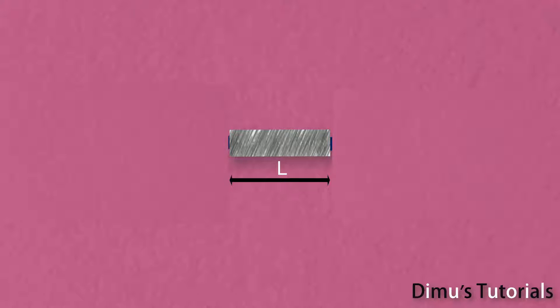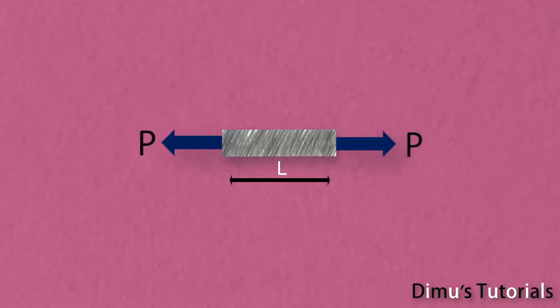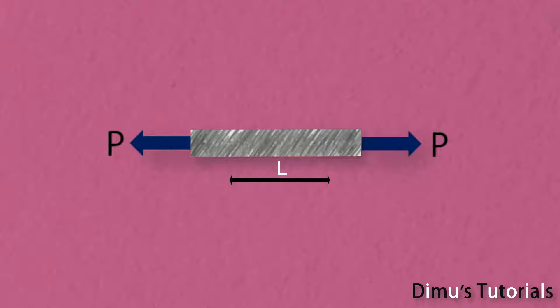Consider a specimen with length L. It is under tensile force at two extreme ends. The specimen will start expanding when both the forces become active.